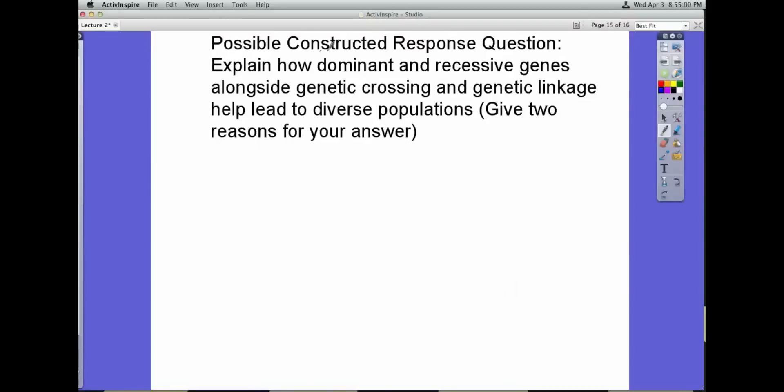In order to show me that you really understand this stuff on the test, you're going to have to do a constructed response question. In this case, the question is explain how dominant and recessive genes alongside genetic crossing and genetic linkage help lead to diverse populations. Make sure to give two reasons for your answers, number one and number two.